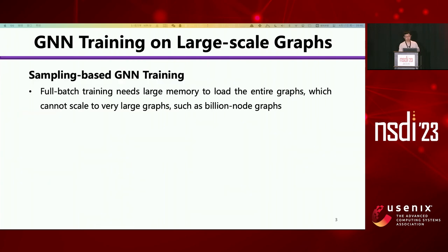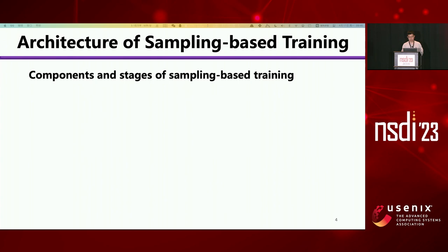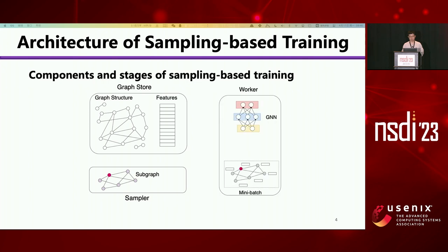Since full batch training needs large GPU memory to load the graph, it cannot scale to very large graphs. Hence, existing GNN training systems adopt sampling-based GNN training. In this method, systems sample a subgraph from the original graph. The sampling-based GNN training system has three components: GraphStore, which contains graph structure and feature data; Sampler, which samples a subgraph; and the worker on GPU, which trains the GNN models.